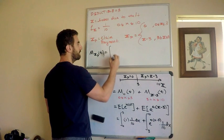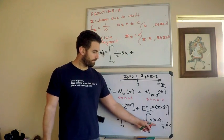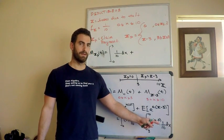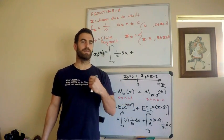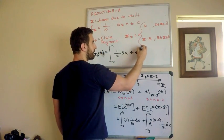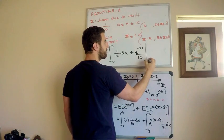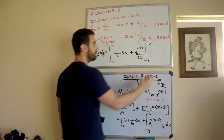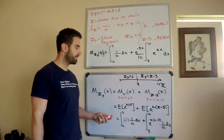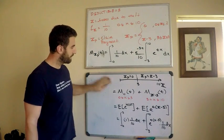Right now, I have that the moment generating function of the claim payment is equal to the sum of these two integrals. So, I'm just going to copy these two integrals up here and then we can think about what we need to do. I have the integral from zero to three of one tenth dx plus. Now, looking right here, I want to clean this up a little bit. The e to the tx minus three. Remember, for an integral you can factor anything out of the integral that does not depend on x. This is what I'm going to do. So, this is equal to, this integral right here is equal to e to the negative three t over ten. I could have factored the one tenth out as well. Times the integral from three to ten of e to the tx dx. Again, I've only needed to keep expressions that depend on x.